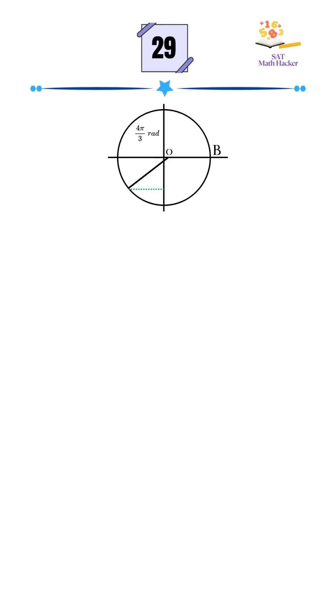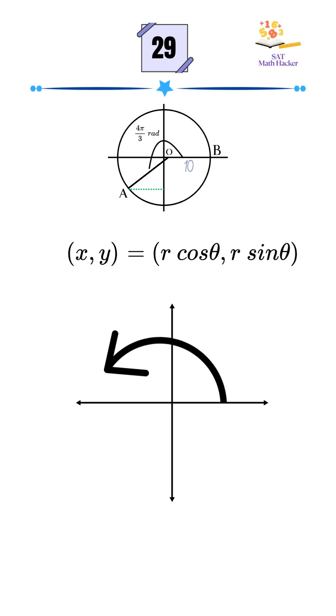Here's a quick tip. When a point lies on a circle and an angle at center and radius is given, we can use the coordinate formula (x, y) equals (r cos θ, r sin θ), where θ is the angle measured counterclockwise from the positive x-axis.